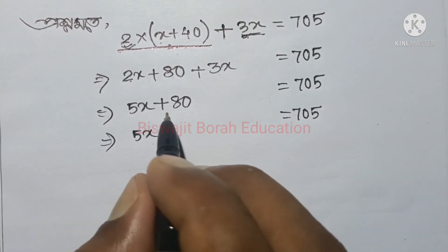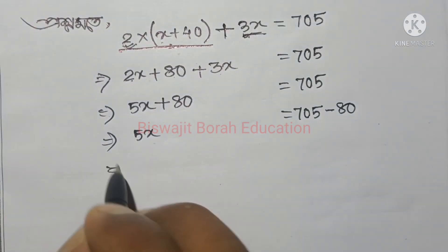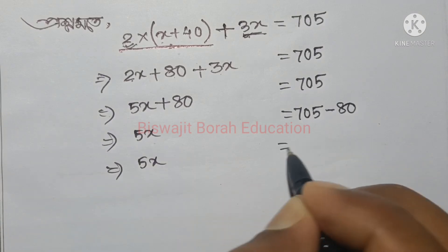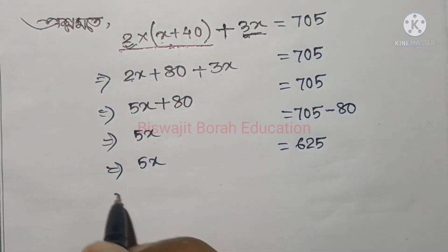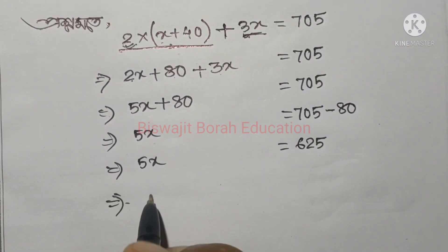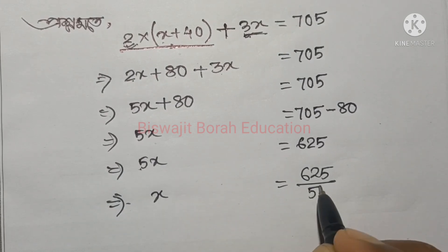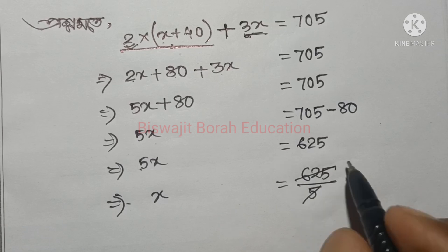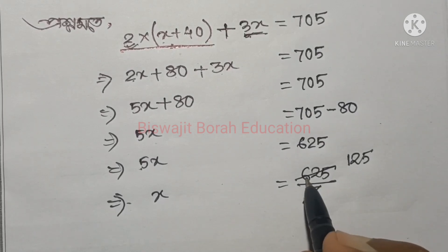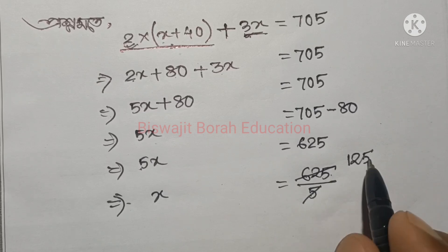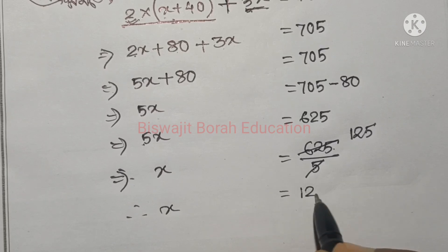So 5x is equal to 705. So 5x is equal to 705. So 625. Next line x is equal to 625. So 5x is equal to 705. So 5x is equal to 125.